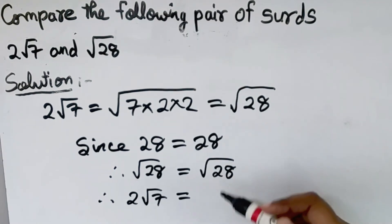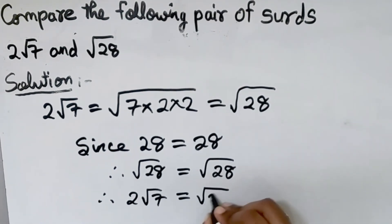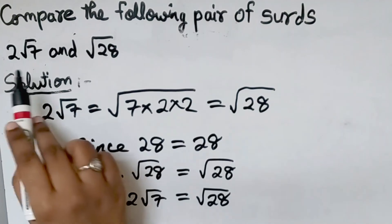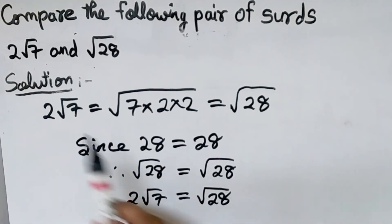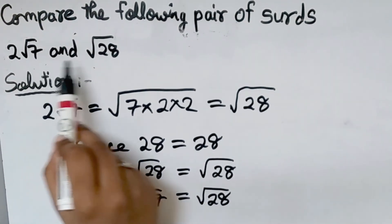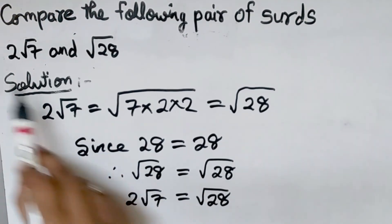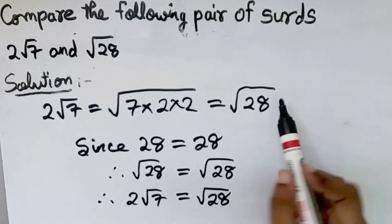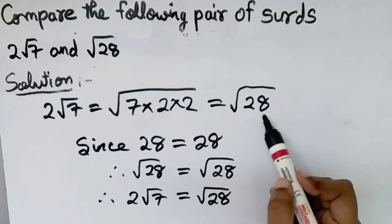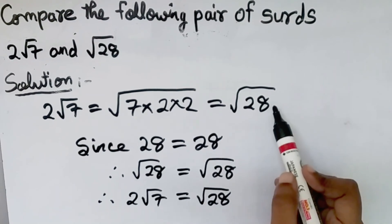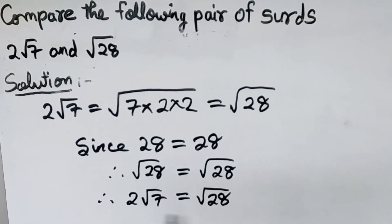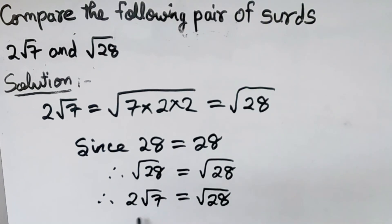After simplification, 2 root 7 gives square root of 28, and the second number is square root of 28. So since 28 equals 28, therefore square root of 28 equals square root of 28. This means 2 root 7 and square root of 28 are equal surds. This is the final answer.